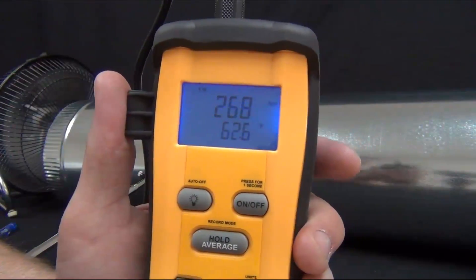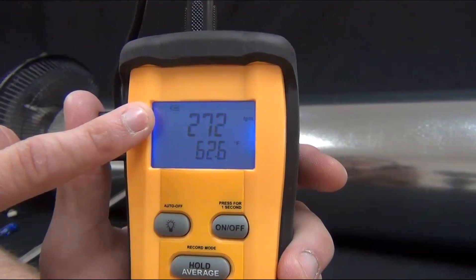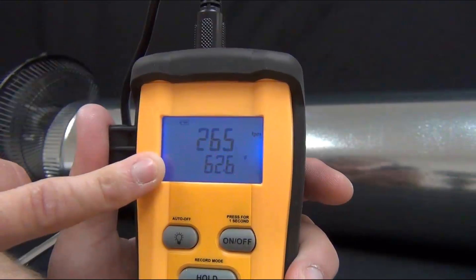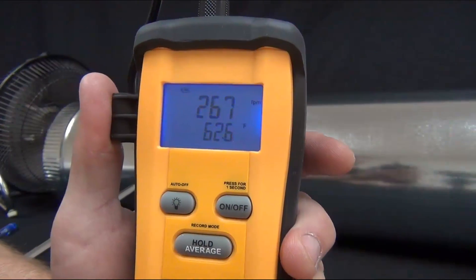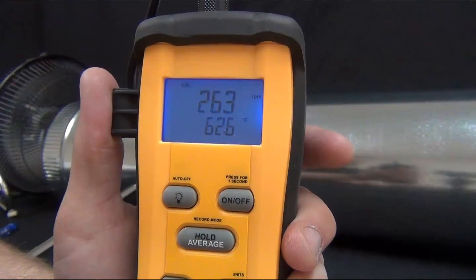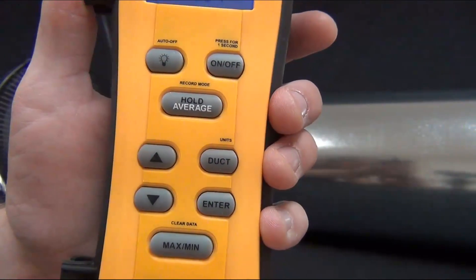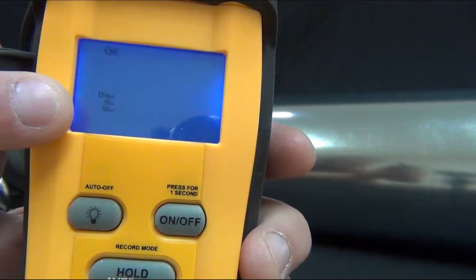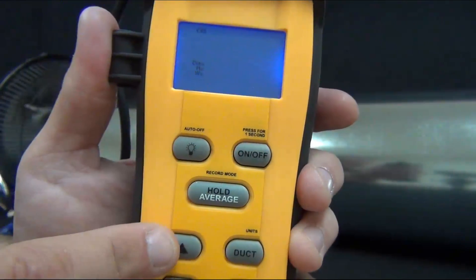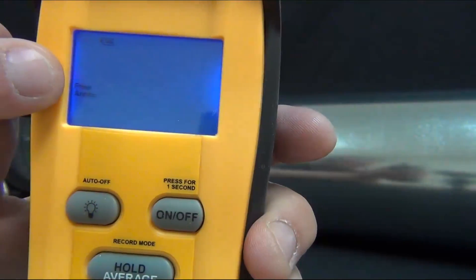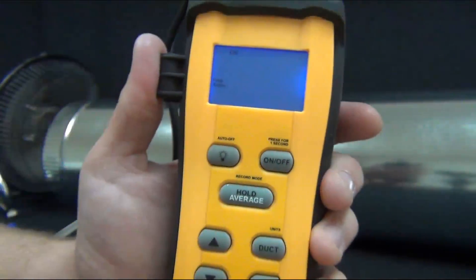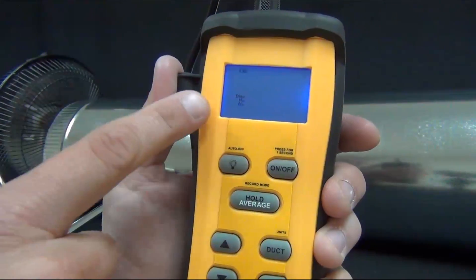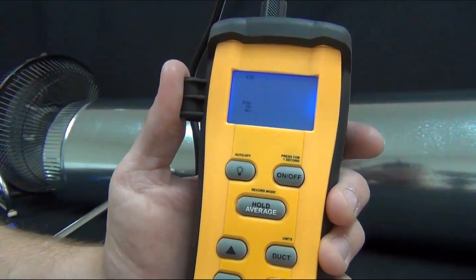First thing it has is a backlight. Right when you turn it on, it'll have the feet per minute and the temperature in the bottom, and depending on what mode you're in, this will change. To get CFM, we have to enter in a duct size. Press duct, and then it's going to ask you if you have the size of the duct or the free area. I have the diameter, so I'm going to switch to diameter, height and width, and press enter.